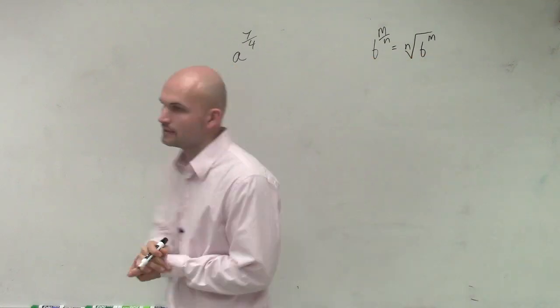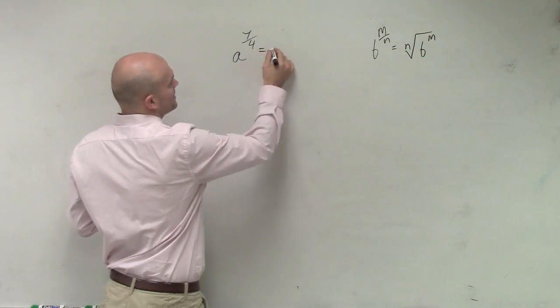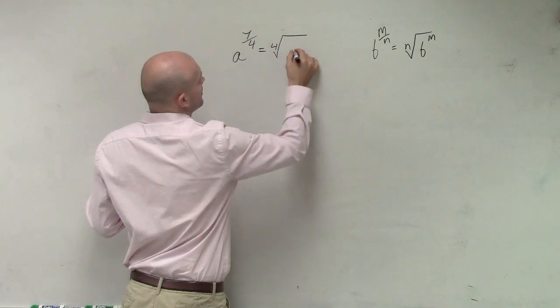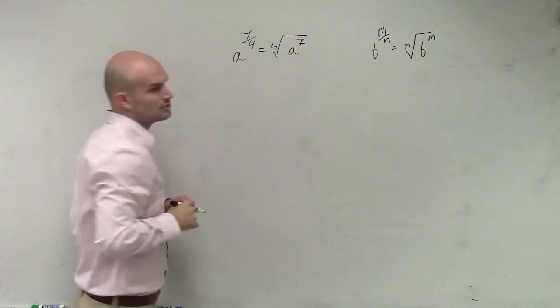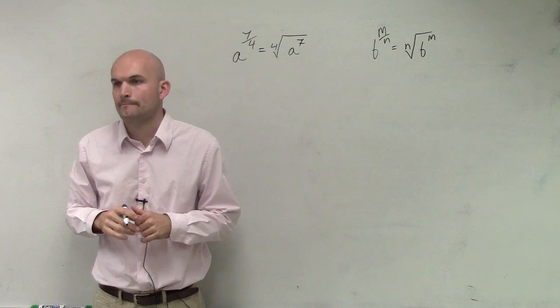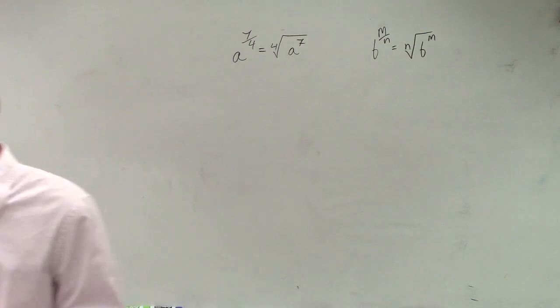So to apply that here, this is going to equal the fourth root of A to the 7th in radical form. That's it. If I ask you just to put it in radical form, that's all you guys have to do.